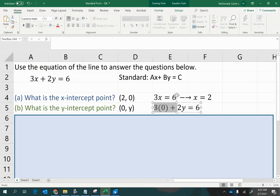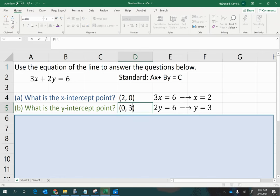So the 3 times 0 becomes just 0, and 0 plus 2y is simply 2y. Then we can divide both sides by 2 to get y equals 6 divided by 2 is 3. So now I know where my y-intercept point is.